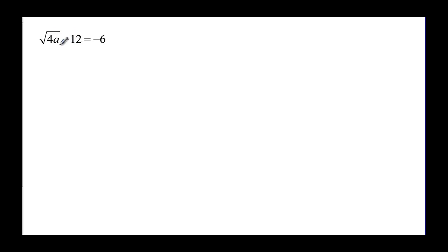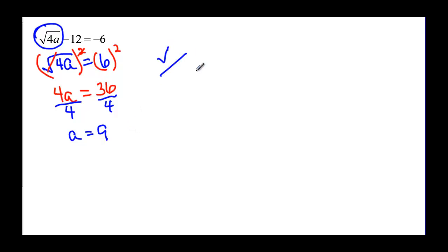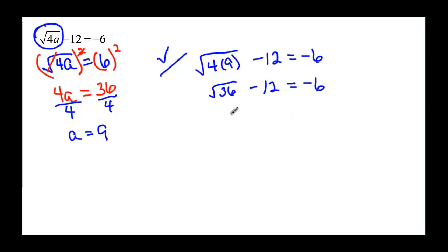Finally, we add 12 to both sides to isolate the radical, giving us the square root of 4a equal to positive 6. Then we square both sides: the square cancels the square root and we have 4a equal to 36, since 6 squared is 36. Divide by 4 and a is equal to 9. We check: the square root of 4 times 9, minus 12, should equal negative 6. The square root of 36 is 6, and 6 minus 12 is negative 6. So a equals 9.